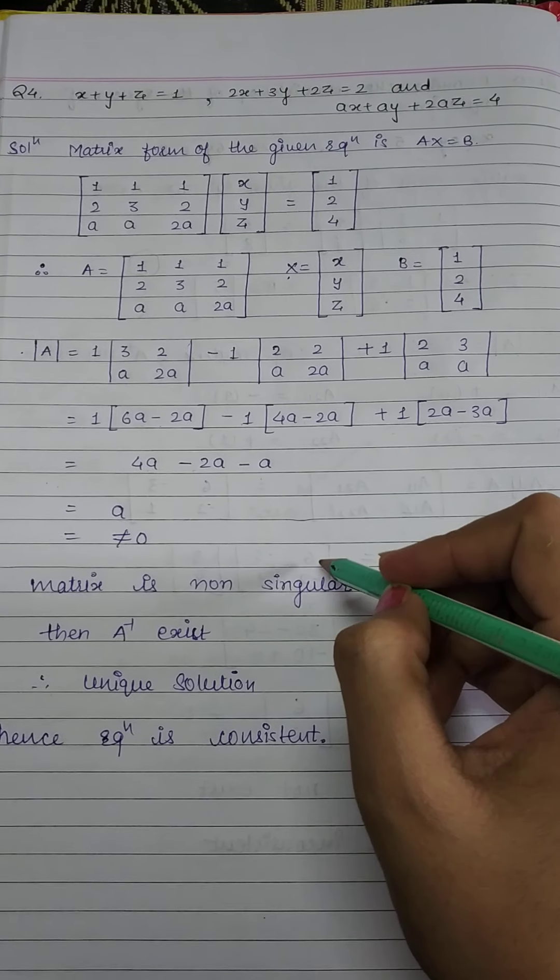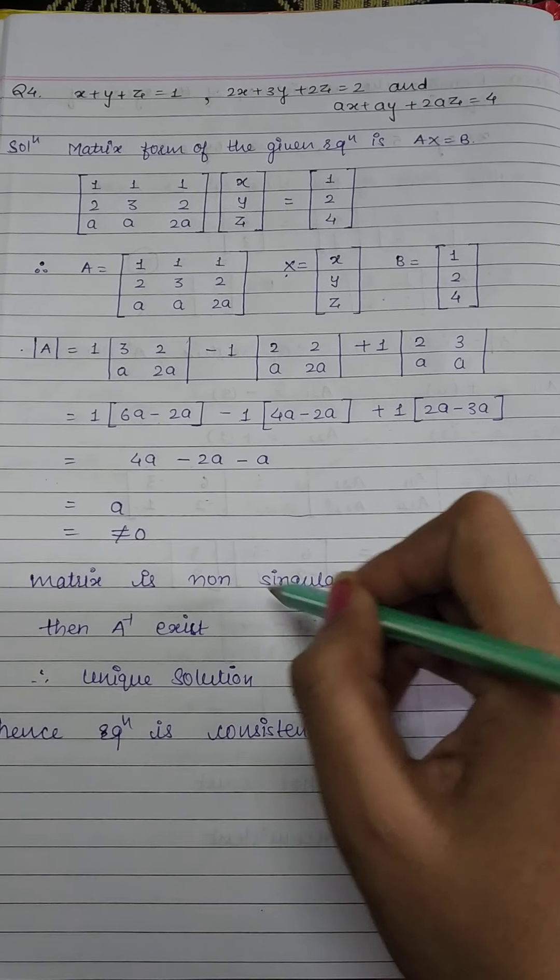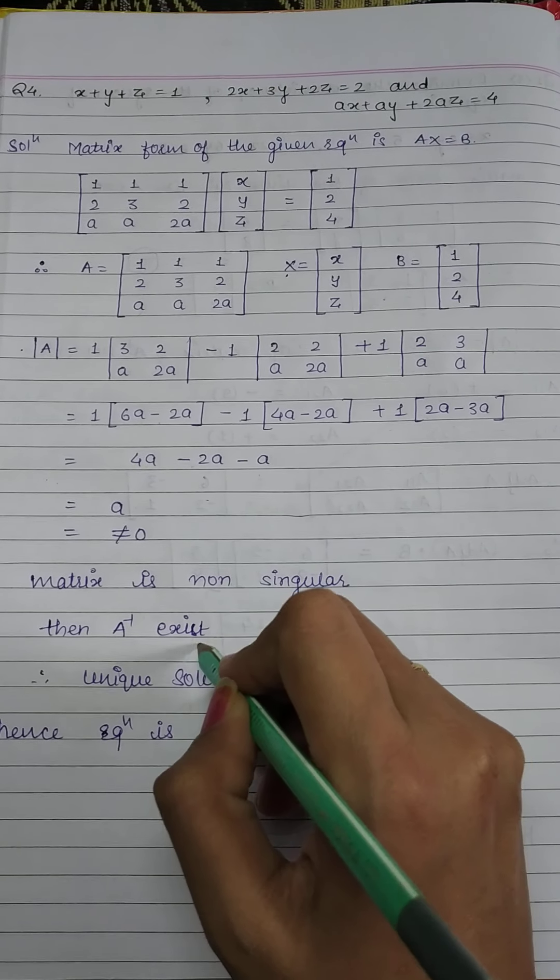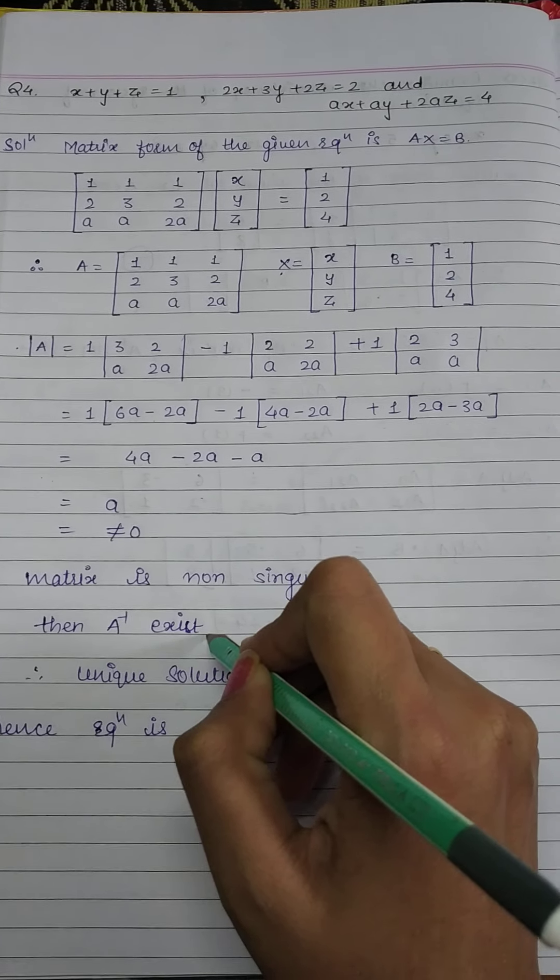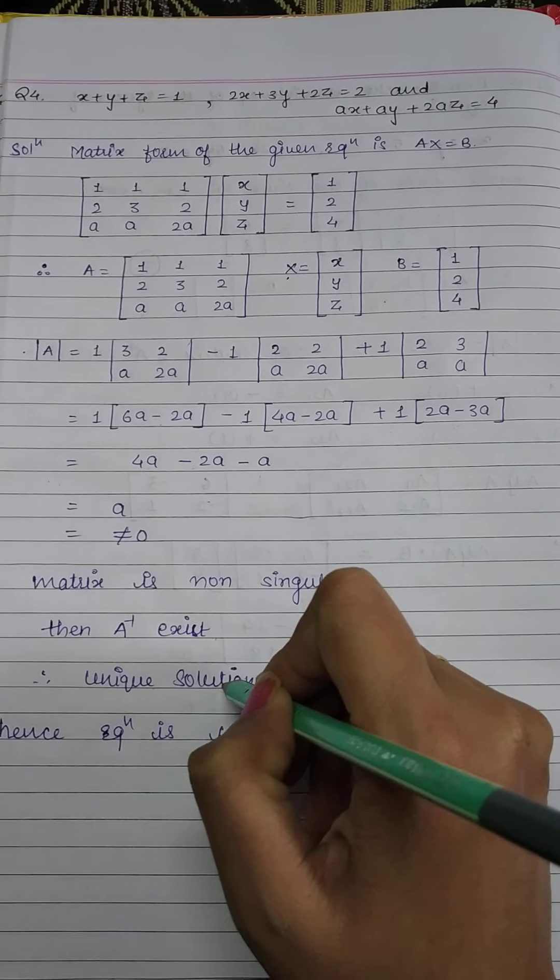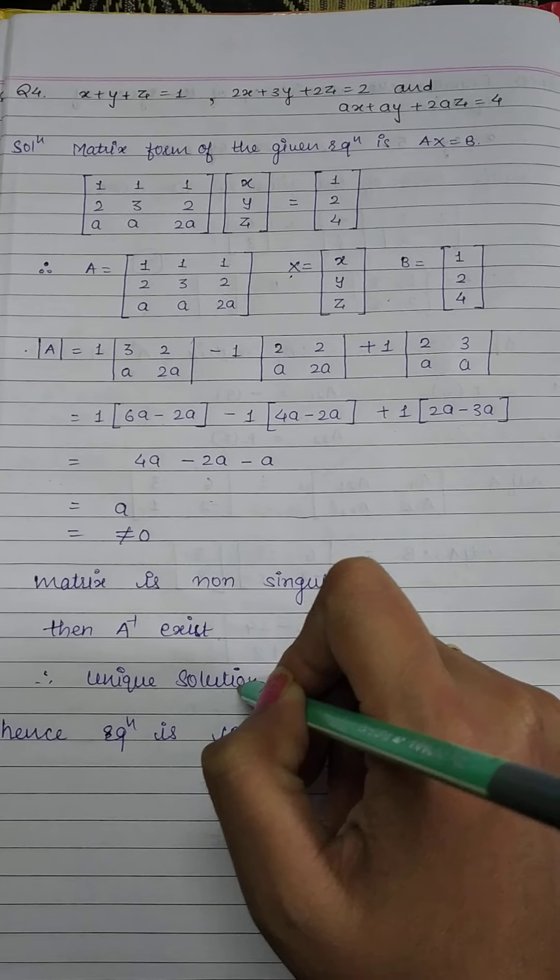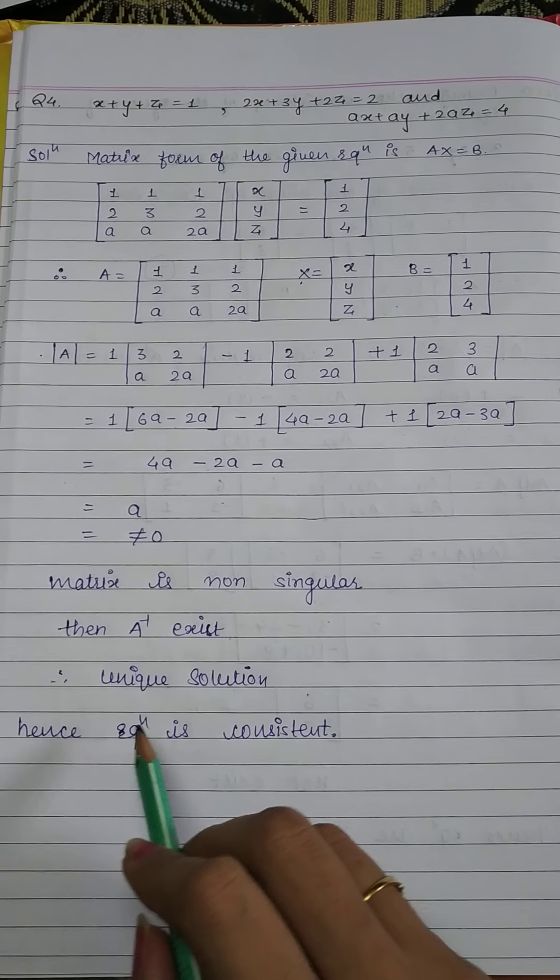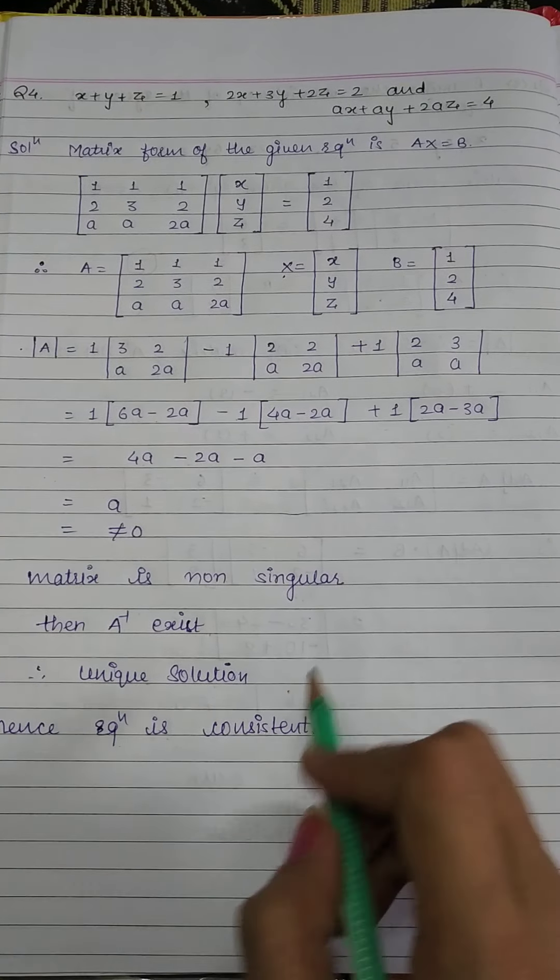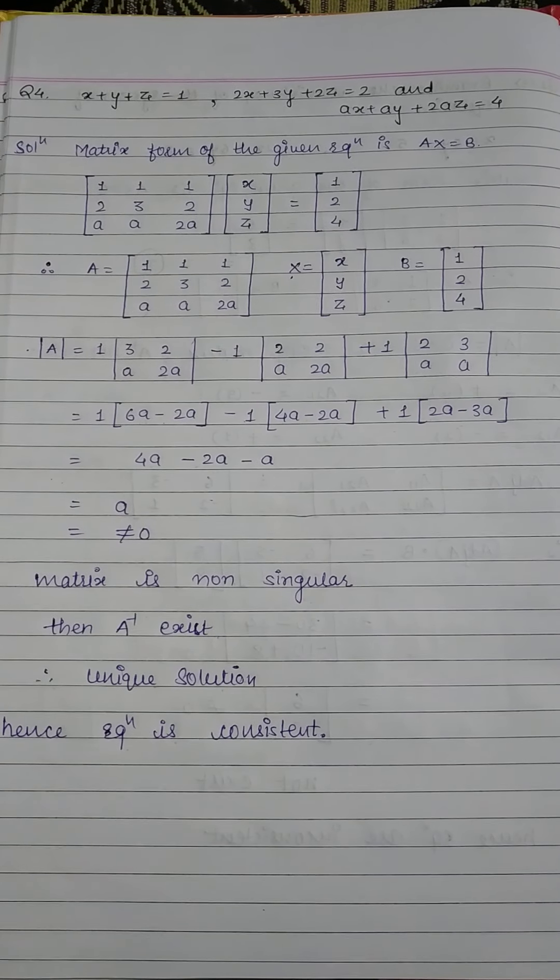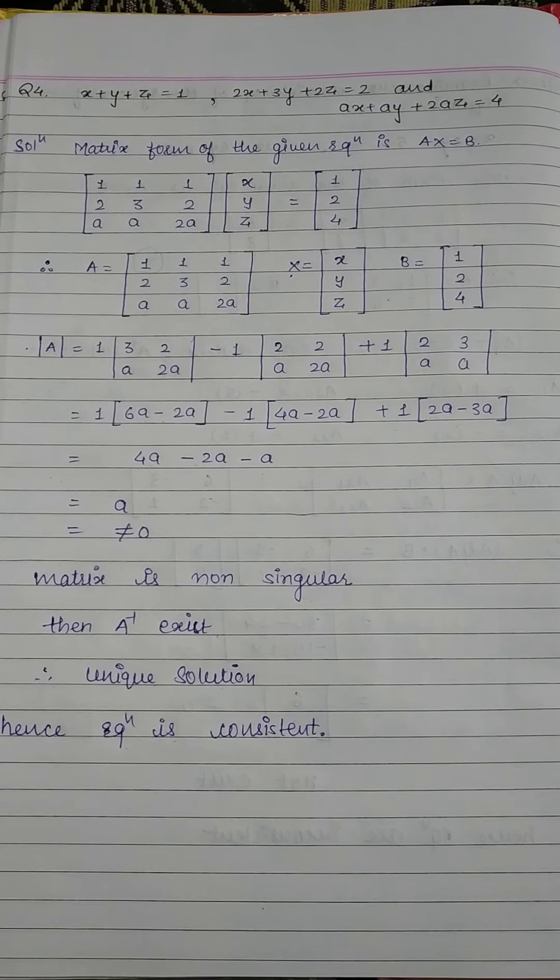Determinant of A 3 by 3 matrix. So we open this element. So we leave this row and column. So what we get is 3, 2, a, 2. This is written 3, 2, a, 2. Mid-term sign change. We find this element. So we leave this row and column. So 2, 2, a, 2. Now the third element is plus 1. This element. So we leave this row and column. What we get is 2, 3, a, a. I write 2, 3, a, a.